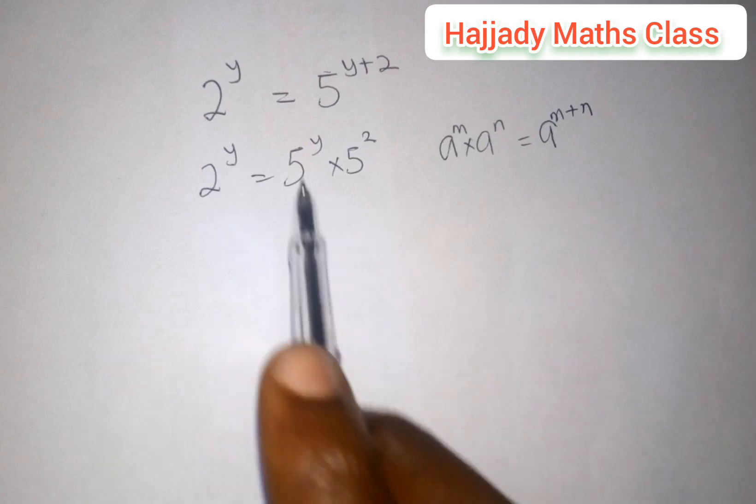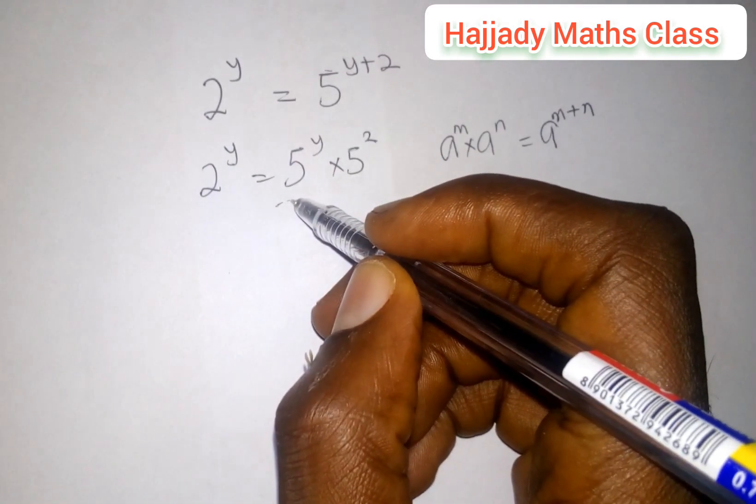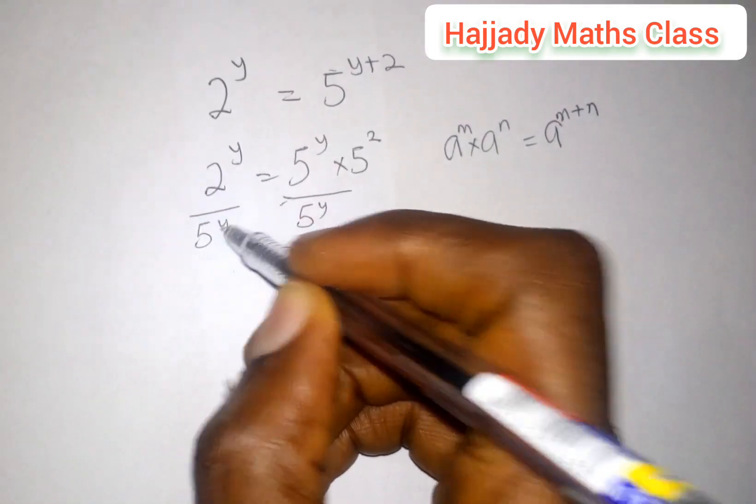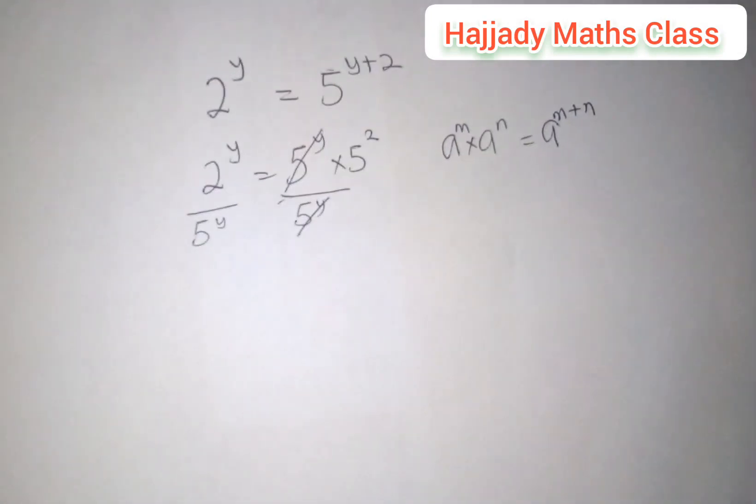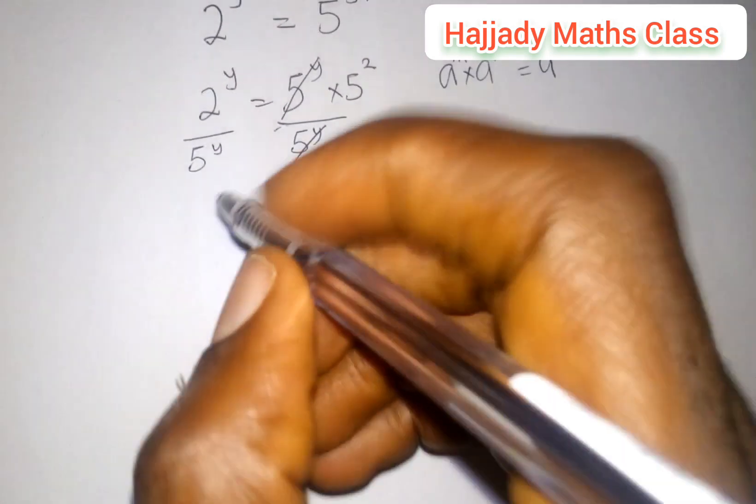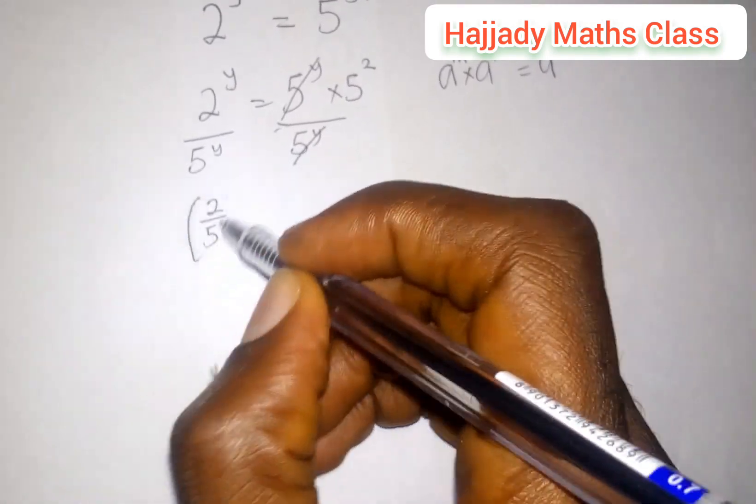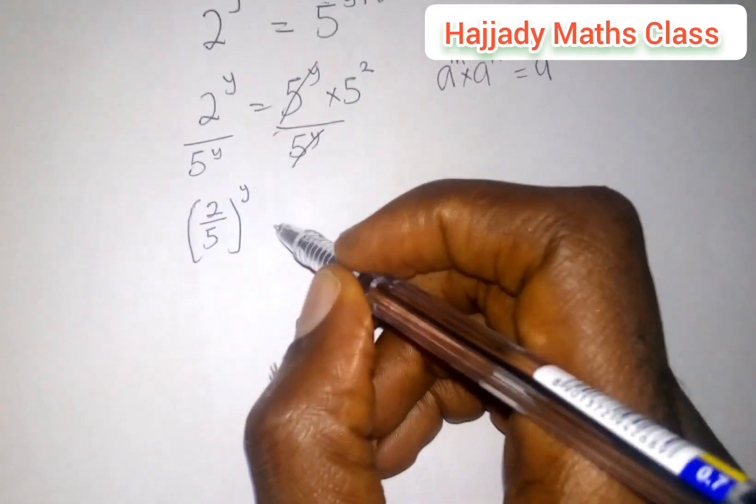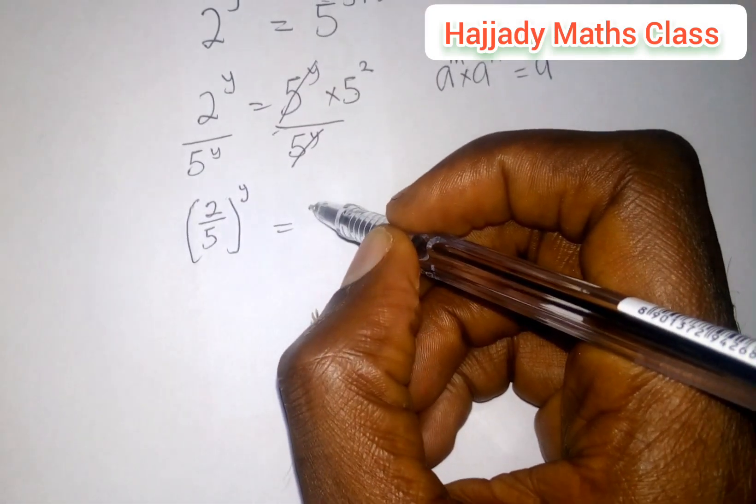The next step is to divide both sides by 5 raised to power y. We are dividing both sides by 5 raised to power y. With this, 5 raised to power y cancels out. From the left hand side, we are left with 2 over 5 raised to power y. Since they are having the same power, we can make it like this, equal 5 raised to power 2, which is equivalent to 25.